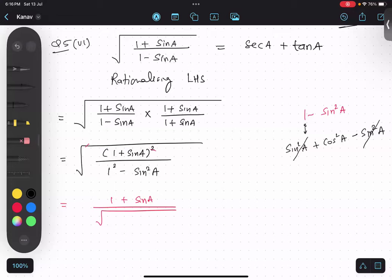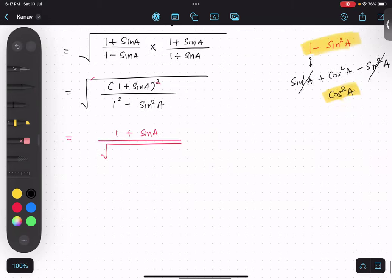How do you know which identity to put? Because the question is in sine, so put sine identity. So I can write it as cos square A. Now it's a whole square, so this root will get cancelled.